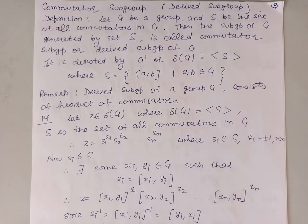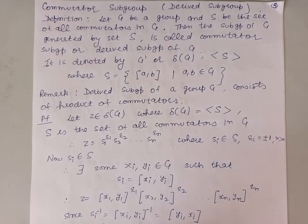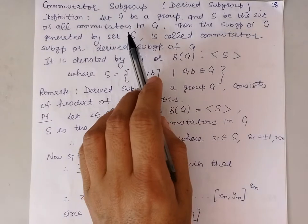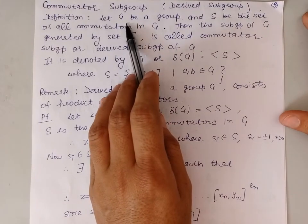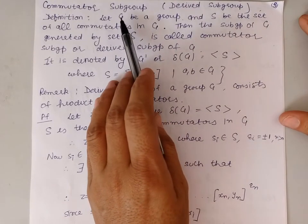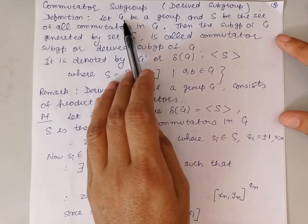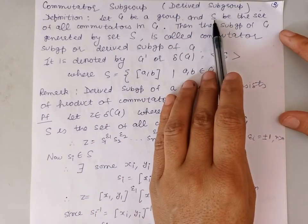Good morning students. Today we will discuss the commutator subgroup of a group G. The commutator subgroup is also called the derived subgroup of the group G. To define this, let us take a group G and the set of all the commutators in this group, which we denote by the set S.